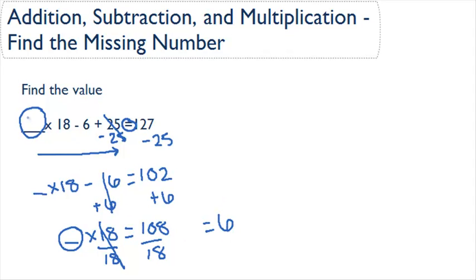That means we can fill in our blank with 6. 6 times 18 is 108, minus 6 is 102, plus 25 is 127.